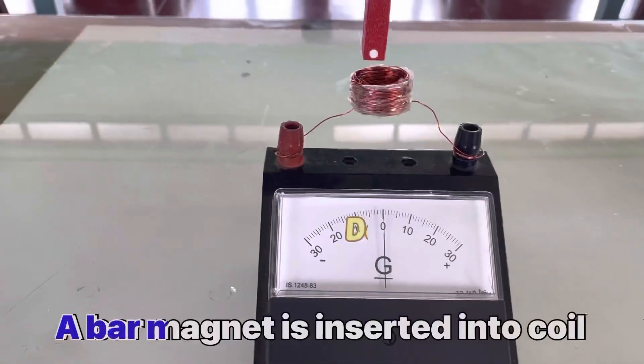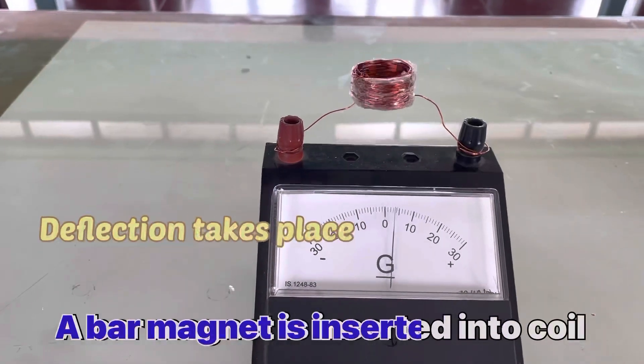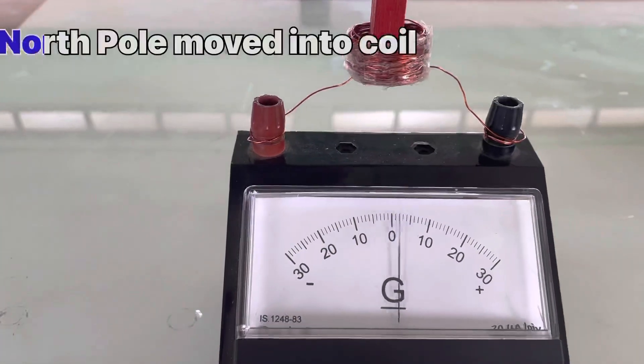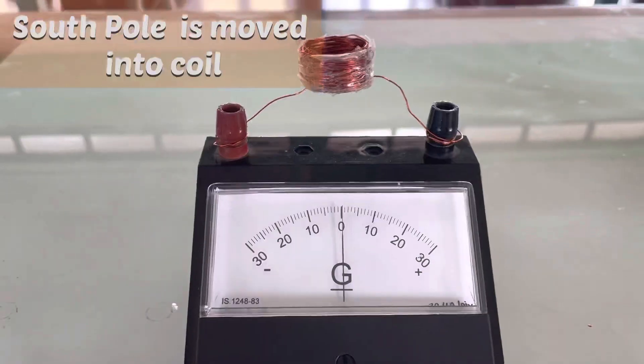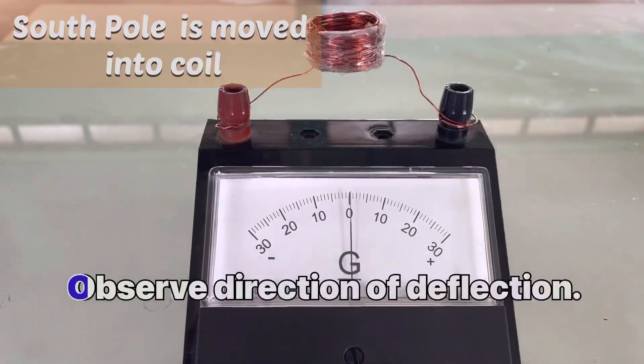Now a bar magnet is inserted into the coil. Deflection takes place. North pole of the bar magnet is moved into the coil. Similarly, south pole is moved into the coil. Observe the direction of deflection.